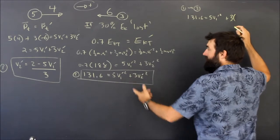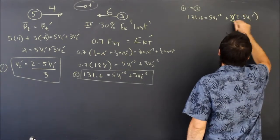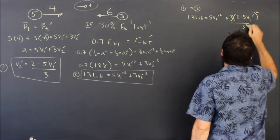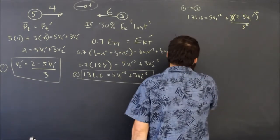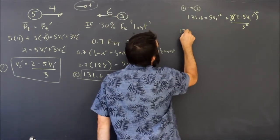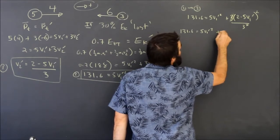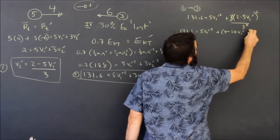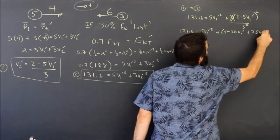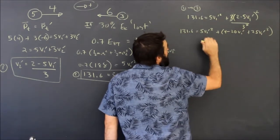131.6 equals 5 v1 prime squared plus 3 times open brackets, 2 minus 5 v1 prime all over 3, both of which are squared. One of those is going to cancel, and I'm going to end up with 131.6 equals 5 v1 prime squared plus 4 minus 20 v1 prime plus 25 v1 prime squared all over 3.